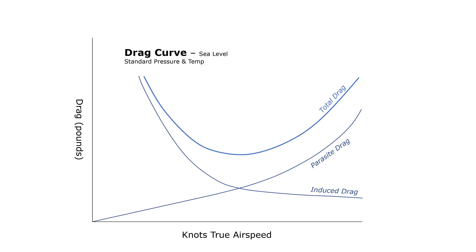The point along the total drag curve which is the closest to the horizontal axis, or zero, is the speed where we have the least amount of drag.